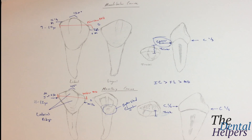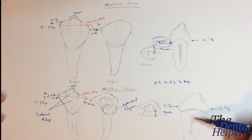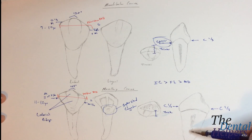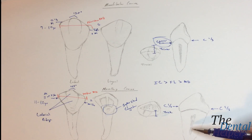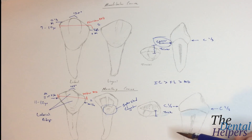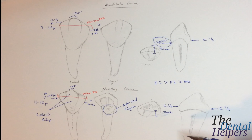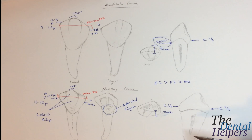The other interesting thing with the canines that we didn't really see much of in the incisors is a depression seen on the root. The depression is more on the distal root surface than the mesial. As we go more posterior, there's going to be a greater depression on the distal side compared to the mesial. Just remember that there's going to be, most of the time, a distinct distal root depression.